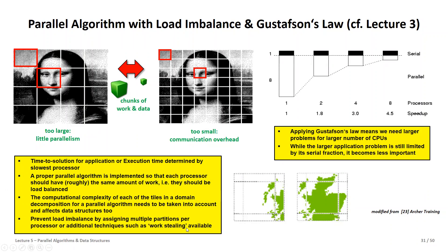There are different ways to handle this. Work stealing is one example: if a processor finishes its tile very quickly, it can be assigned another tile while another process is still busy with its own. This can help alleviate load imbalance, but it's still not easy to achieve.